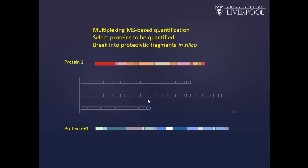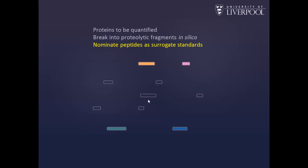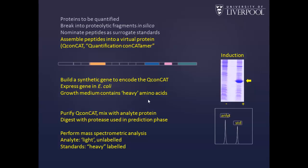The approach we take in QCONCAT technology is, first of all, we select the proteins we want to quantify. We then, in silico, break them into proteolytic fragments, and we do this for all of the proteins. From those proteolytic fragments, we select certain peptides to be used as standards — most of the peptides are discarded at this stage, and we retain only a few. In QCONCAT methodology, we then take those peptide sequences and use them to create a template for a synthetic gene, assembling those peptides into the appropriate order into a synthetic protein, and then we buy and build a synthetic gene to encode that protein.